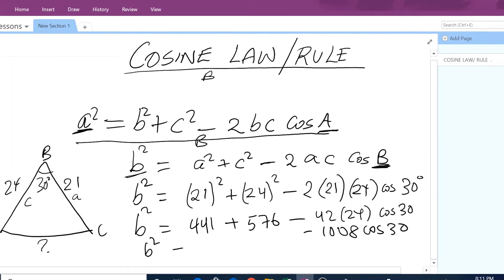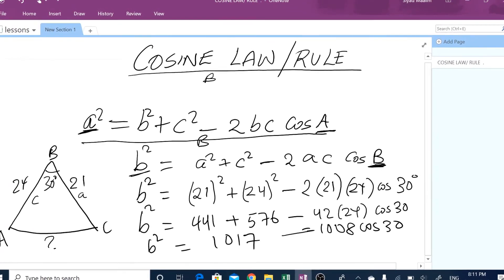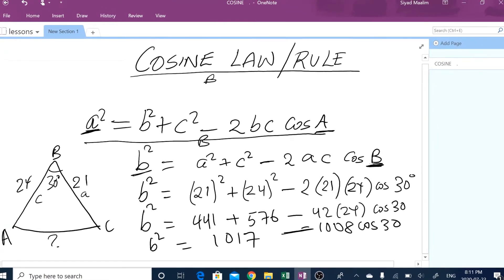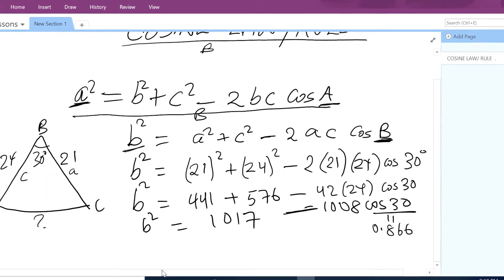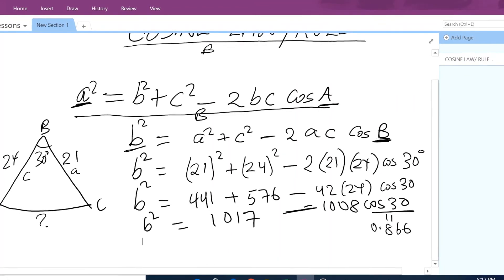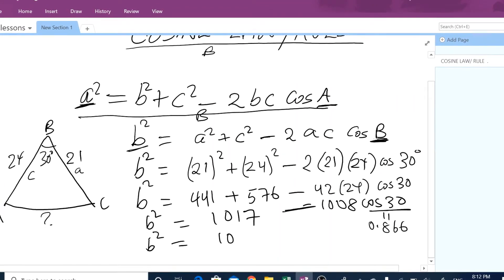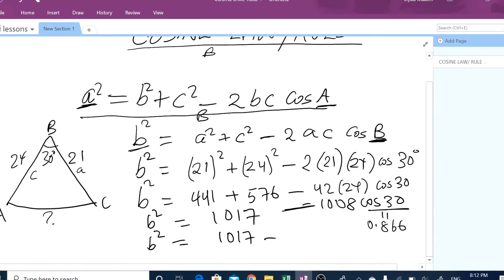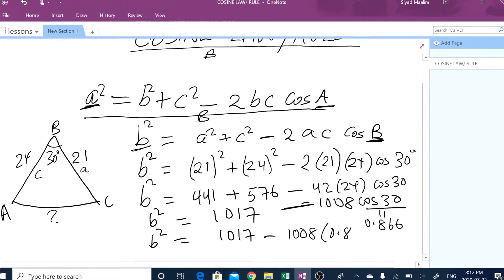cos 30. So this will be b squared equals 1017 minus 1008 cos 30. What is cos 30?